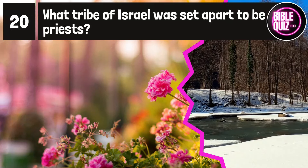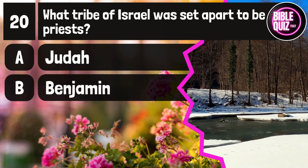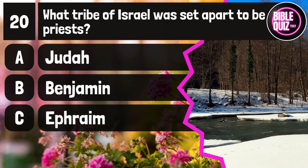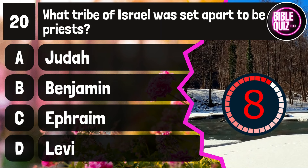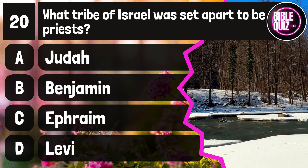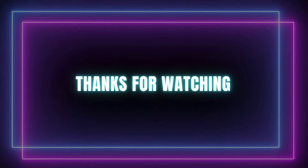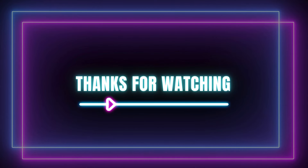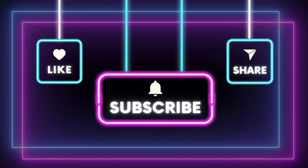Question number 20. What tribe of Israel was set apart to be priests? Option A: Judah. Option B: Benjamin. Option C: Ephraim. Option D: Levi. Time to think. The answer is option D: Levi. Thanks.